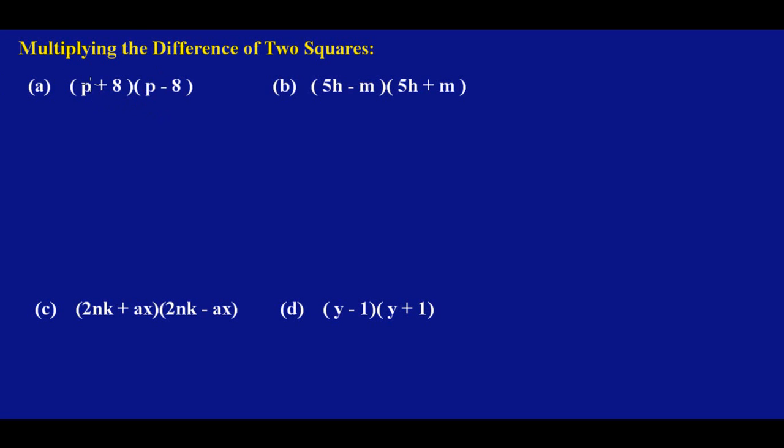So how do we go about this? It's very easy. Let's just expand the bracket, so I am going to use p to multiply p, and then I'm going to use p again to multiply negative 8. Then I'm going to use 8 to multiply this p, and then I'm going to use this 8 again to multiply that 8.